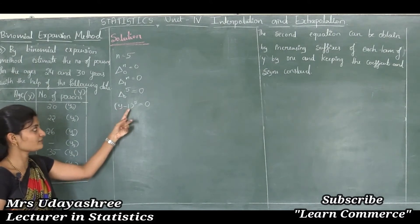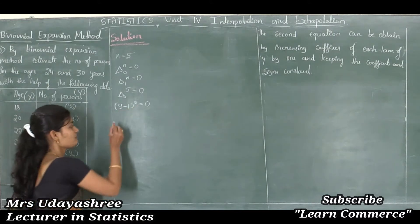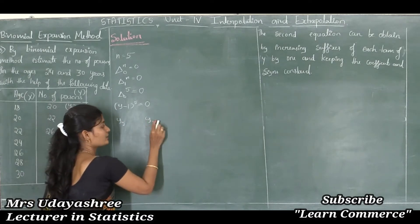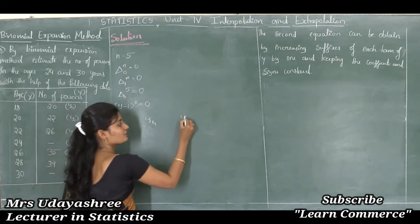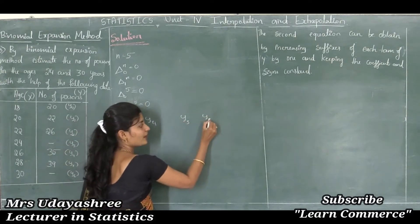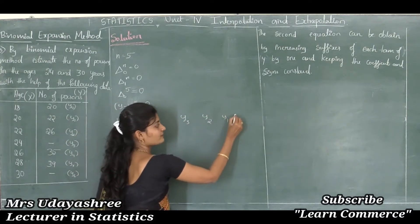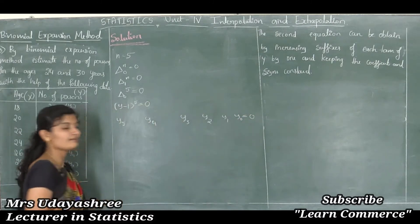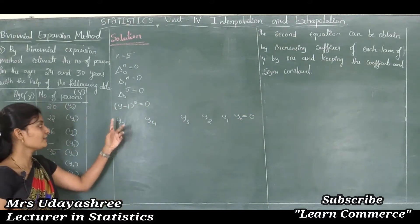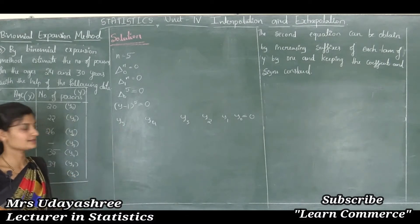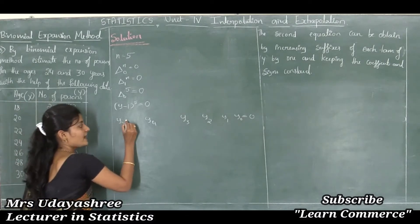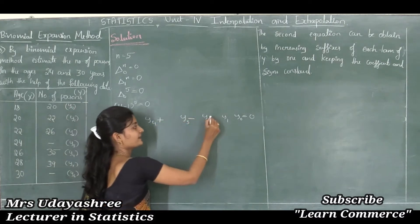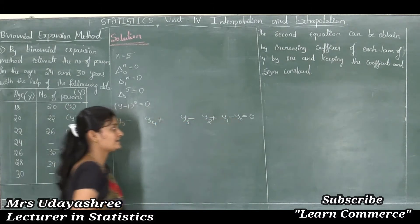Expanding the left hand side, (y - 1)^5 gives terms y5, y4, y3, y2, y1, y naught equal to 0. After that I will add the signs: plus, minus, plus, minus, plus, minus.